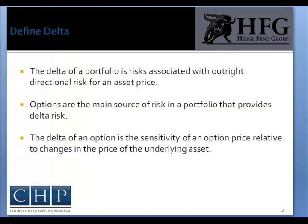The Delta of a portfolio is the risk associated with outright directional risk of the underlying asset price. The Delta of a portfolio can be mitigated by using an offsetting financial instrument to reduce the outright directional risk associated with the asset price movement. Options are the main source of risk in a portfolio that provides Delta risk.